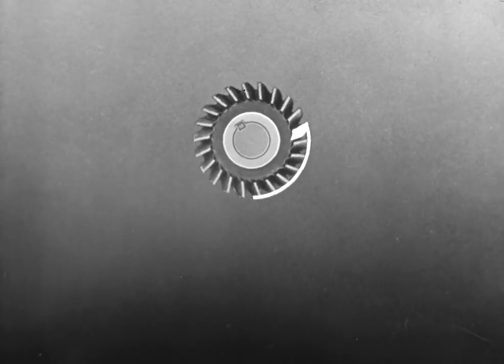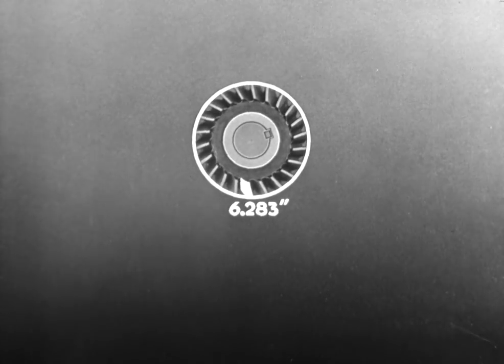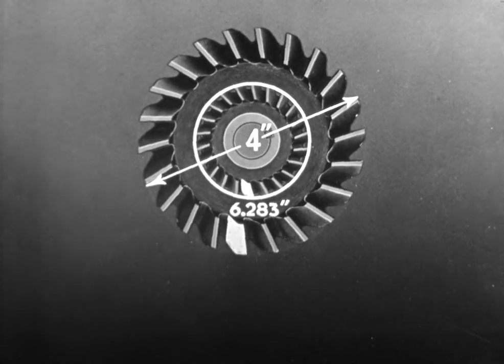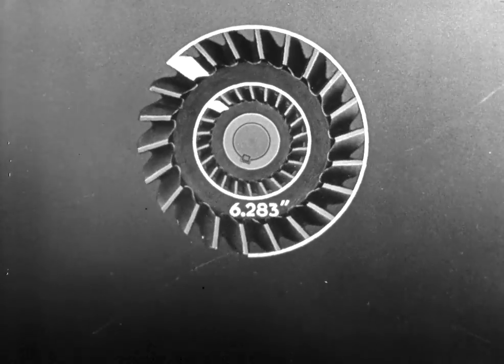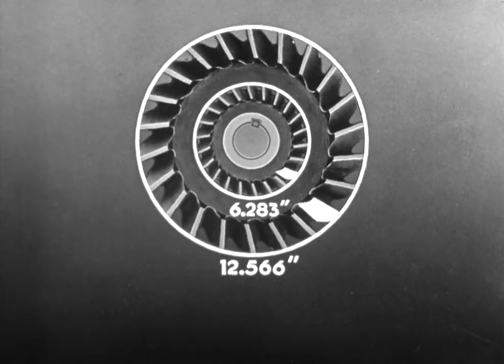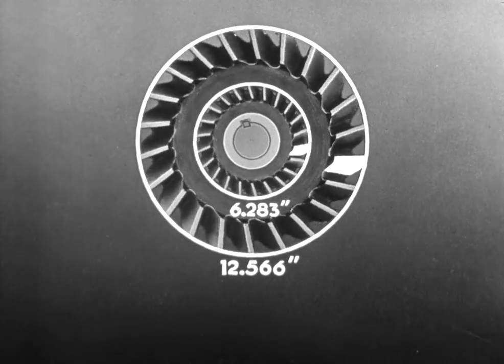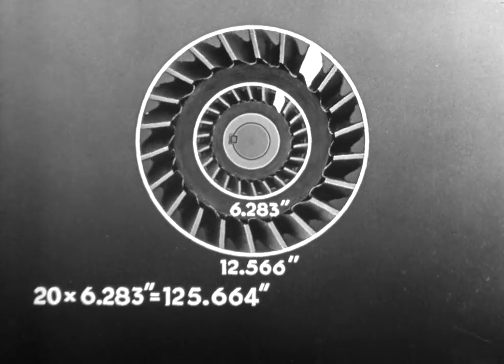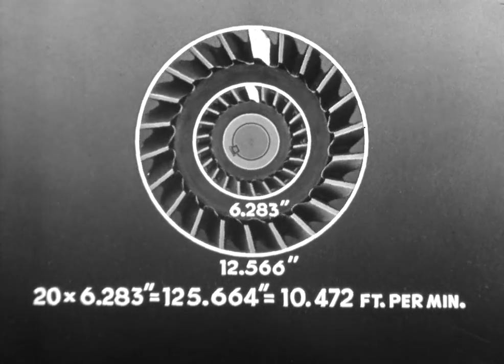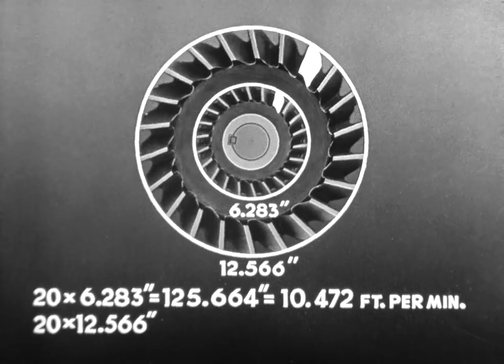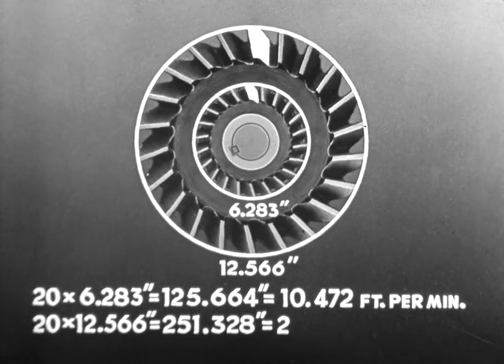This can be easily illustrated. The distance traveled by a single tooth of a two-inch cutter in one revolution is equal to the circumference of the cutter, six and two hundred and eighty-three thousandths. Even though both cutters revolve at the same speed, the distance traveled by a single tooth of a four-inch cutter in one revolution is twice as far, since the circumference is twice as great, twelve and five hundred sixty-six thousandths. If both cutters rotate at twenty RPM, the teeth of the two-inch cutter travel slightly under ten and a half feet, while the four-inch cutter travels almost twenty-one feet.